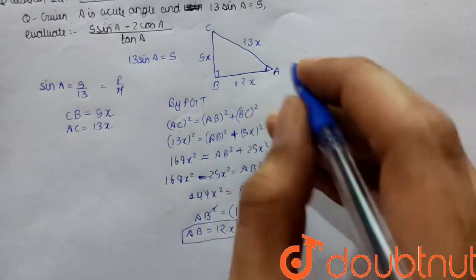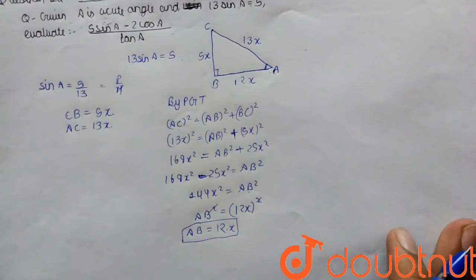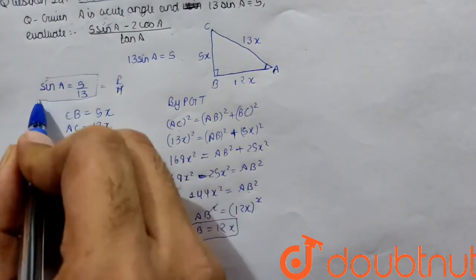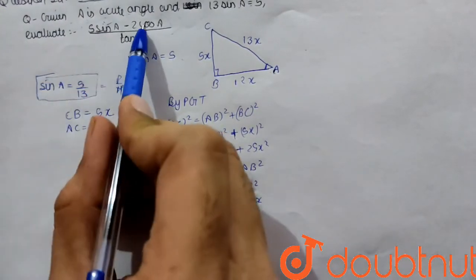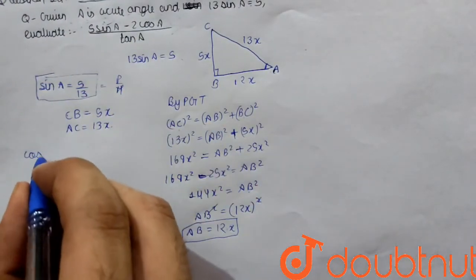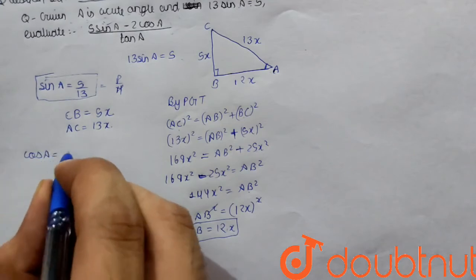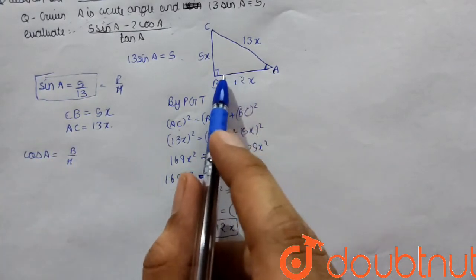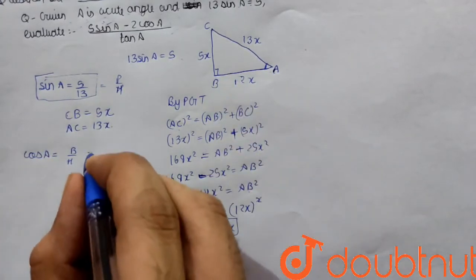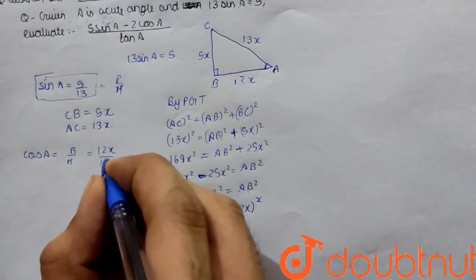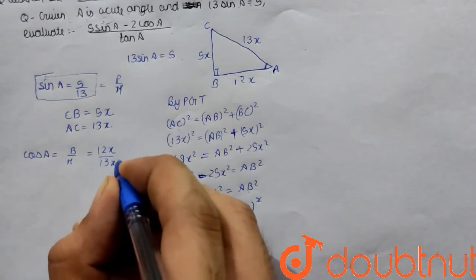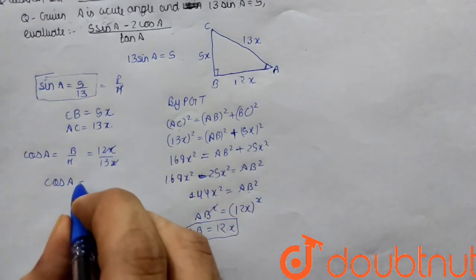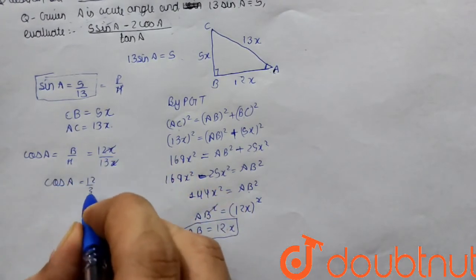Now we already have sin A. We need to find cos A. Cos A equals base upon hypotenuse, so cos A equals 12x upon 13x. The x cancels, giving cos A equals 12 by 13.